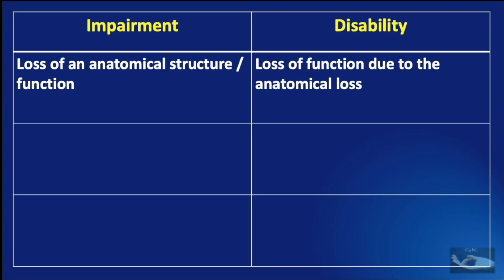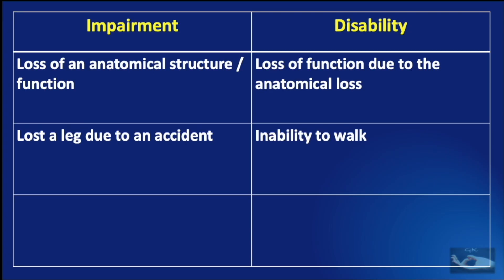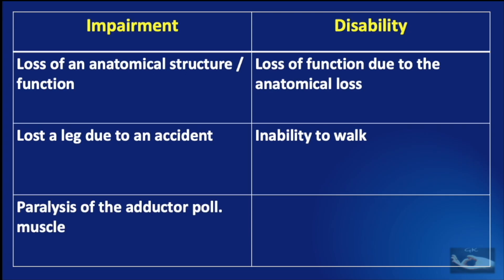To illustrate: impairment is loss of an anatomical structure or function, while disability is the functional loss resulting from that anatomical loss. For example, if a patient loses a leg in an accident, that is the impairment; the inability to walk is the disability. Similarly, paralysis of the adductor pollicis muscle is an impairment, and the resulting inability to perform an adequate pinch using the thumb and index fingers is the disability. These disabilities arising in ulnar nerve palsy will be covered in the next must know series video.